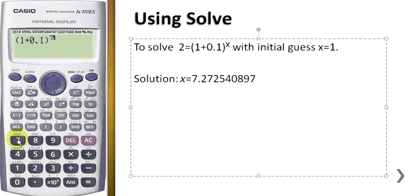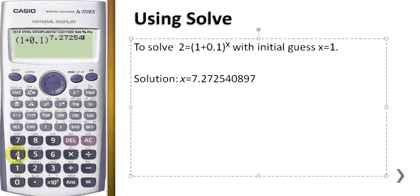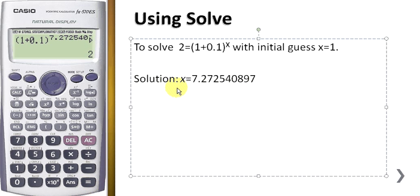7.27254089 and you'll get 2. So when X is equal to 7.252725408, then 1 plus 0.1 to the power of X will equal to 2.